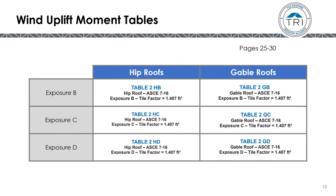There are now six wind uplift tables, three for hip roofs and three for gable roofs, broken down by exposure. Exposure B hip roof is Table 2HB; Exposure B gable roof is Table 2GB. In Exposure C, hip roof is Table 2HC and gable roof is Table 2GC. In Exposure D, you have Table 2HD and Table 2GD.